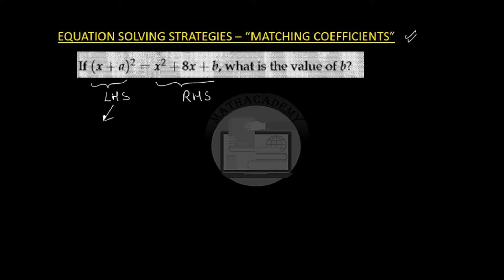So let us see what are the terms in the left hand side. When we do x plus a whole square by the formula of a plus b whole square, it is a square plus 2ab plus b square. I hope by now everyone is aware of this identity a plus b whole square.